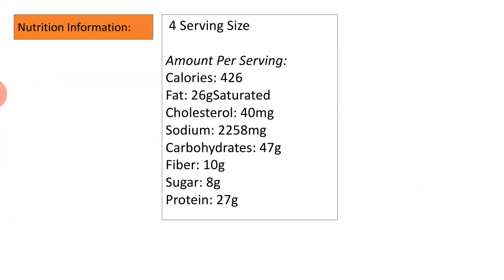Nutrition information — four servings. Amount per serving: calories 426, fat 26 grams, cholesterol 44 milligrams, sodium 2258 milligrams, carbohydrates 74 grams, fiber 10 grams, sugar 8 grams, and protein 27 grams.